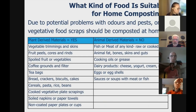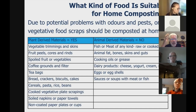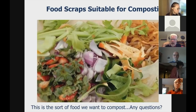Now we're going to talk about wormeries. What type of food is suitable for home composting? Due to potential problems — odors and pests — we only recommend vegetable or plant-based food scraps: vegetable trimmings, food peels, spoiled fruit, coffee grounds, tea bags, bread, pasta, crackers, cakes, cooked cereal. It can be cooked or uncooked. The dividing line isn't cooked versus uncooked — it's between plant-derived and animal-derived materials. No fish or meat of any kind, no fat, bones, skin, guts, cooking oils or grease, dairy products, eggshells, or soups and sauces with meat or fish. Our compost is on a vegetarian diet.